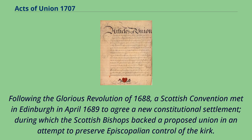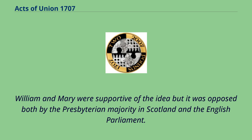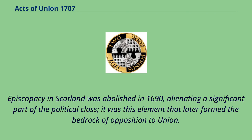Following the Glorious Revolution of 1688, a Scottish convention met in Edinburgh in April 1689 to agree a new constitutional settlement, during which the Scottish bishops backed a proposed union in an attempt to preserve Episcopalian control of the Kirk. William and Mary were supportive of the idea, but it was opposed both by the Presbyterian majority in Scotland and the English Parliament. Episcopacy in Scotland was abolished in 1690, alienating a significant part of the political class; it was this element that later formed the bedrock of opposition to union.